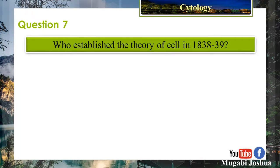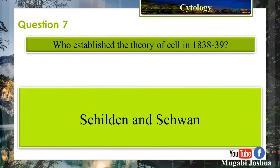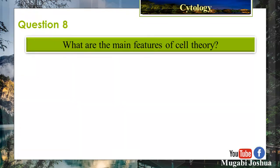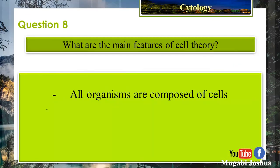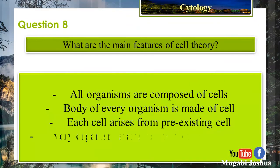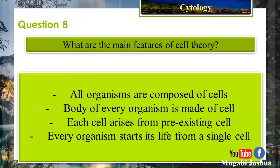Question 7: Who established the cell theory in 1838–39? Schleiden and Schwann. Question 8: What are the main features of cell theory? Organisms are composed of cells; the body of every organism is made of cells; each cell arises from a pre-existing cell; every organism starts its life from a single cell.